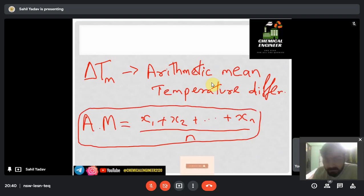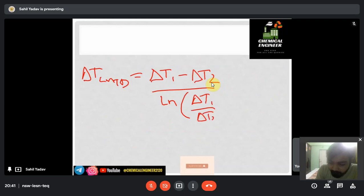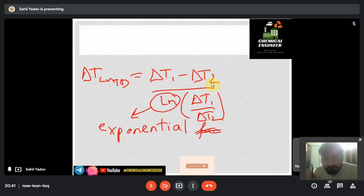While ΔT LMTD is based on (ΔT₁ - ΔT₂) divided by ln(ΔT₁/ΔT₂). Now this is what we call as exponential factor or exponential generally. So why do we use ΔT LMTD?